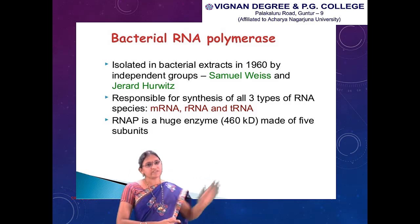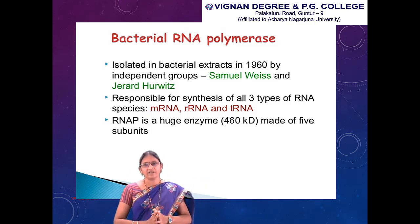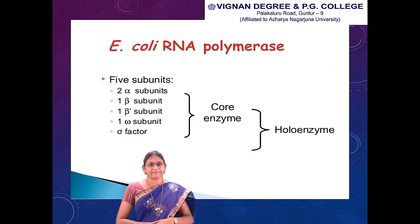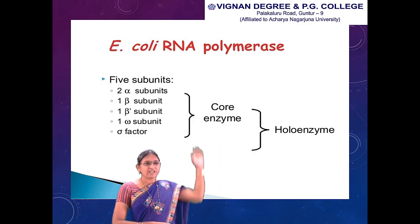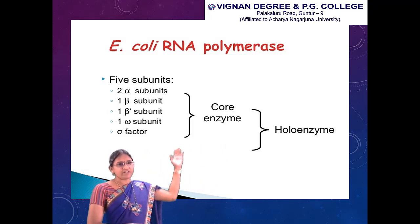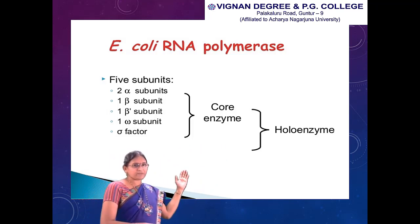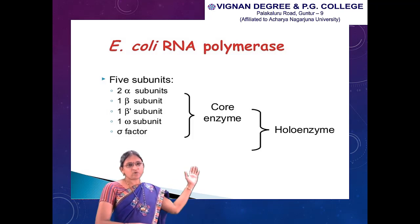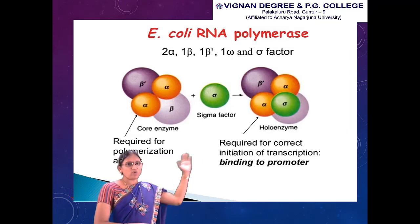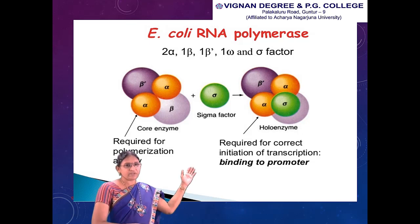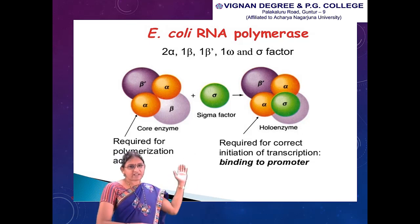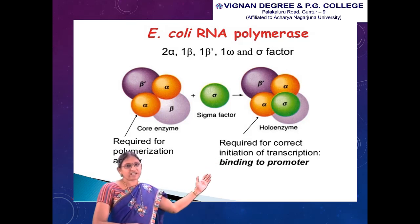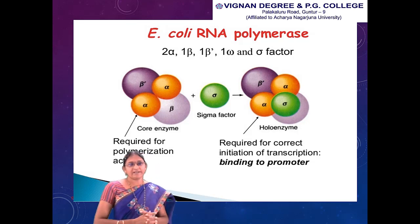RNA polymerase is a large enzyme, about 460 kilodaltons, made of 5 subunits. There are 2 alpha subunits, 1 beta subunit, 1 beta prime subunit, and 1 omega subunit, which together comprise the core enzyme. When the sigma factor — the specificity factor — is added to these subunits, they comprise the holoenzyme. The 2 alpha and 2 beta subunits are required for polymerization, and when sigma factor is attached, the holoenzyme is produced, which is required for correct initiation of transcription and binding to the promoter region.